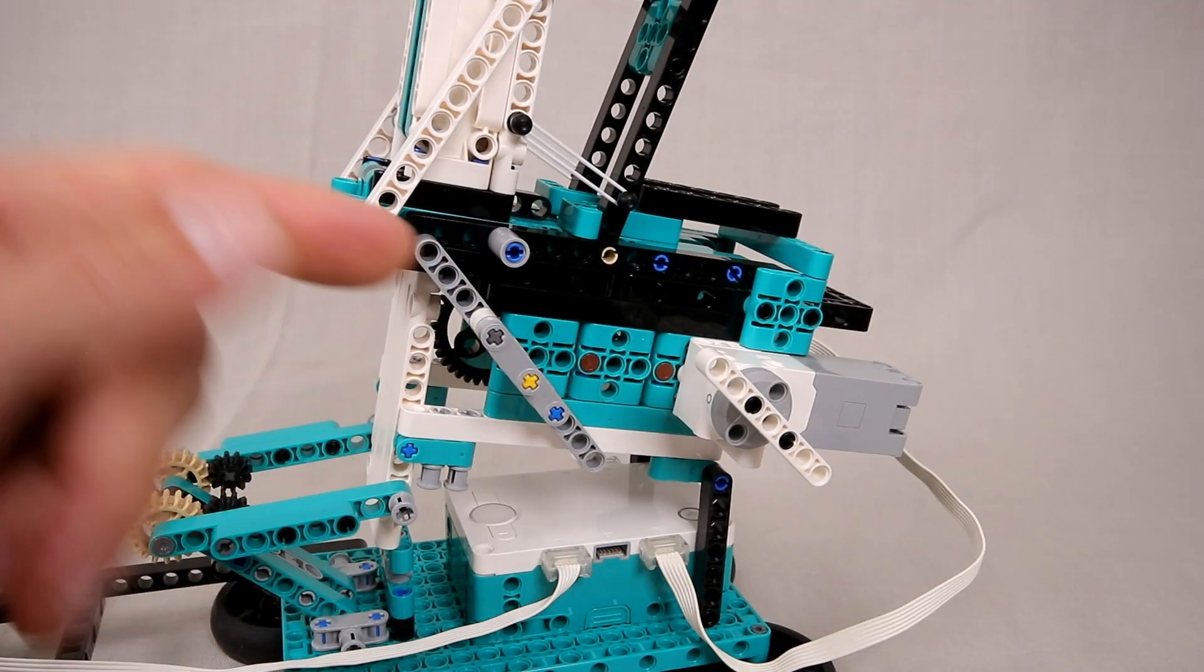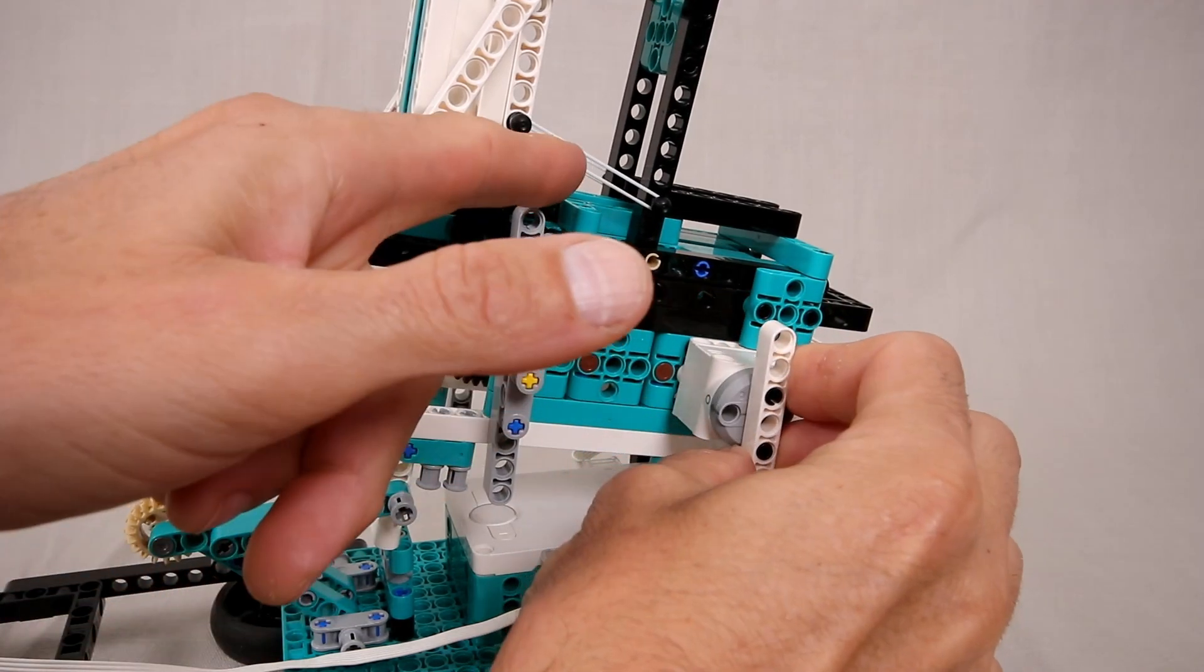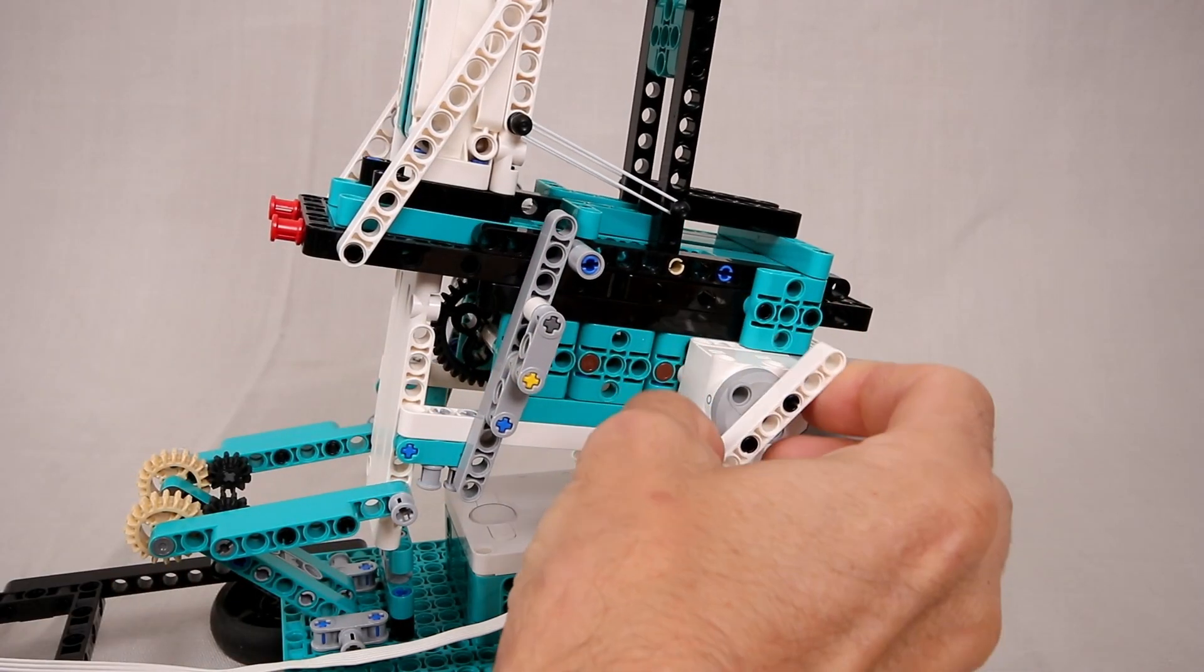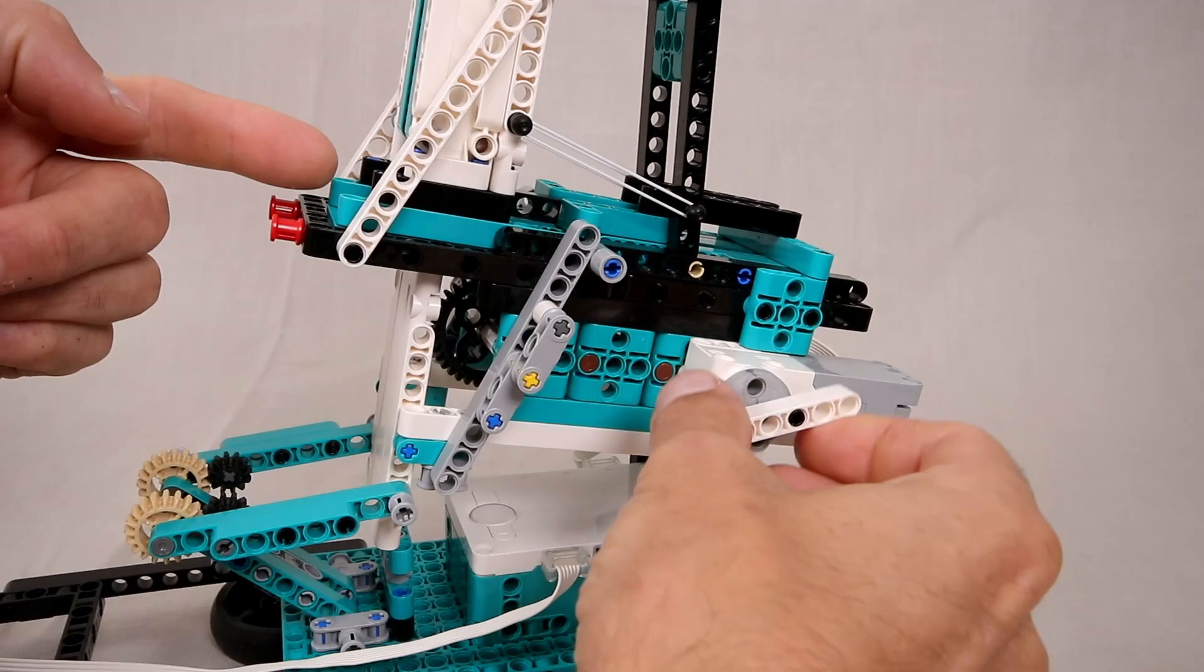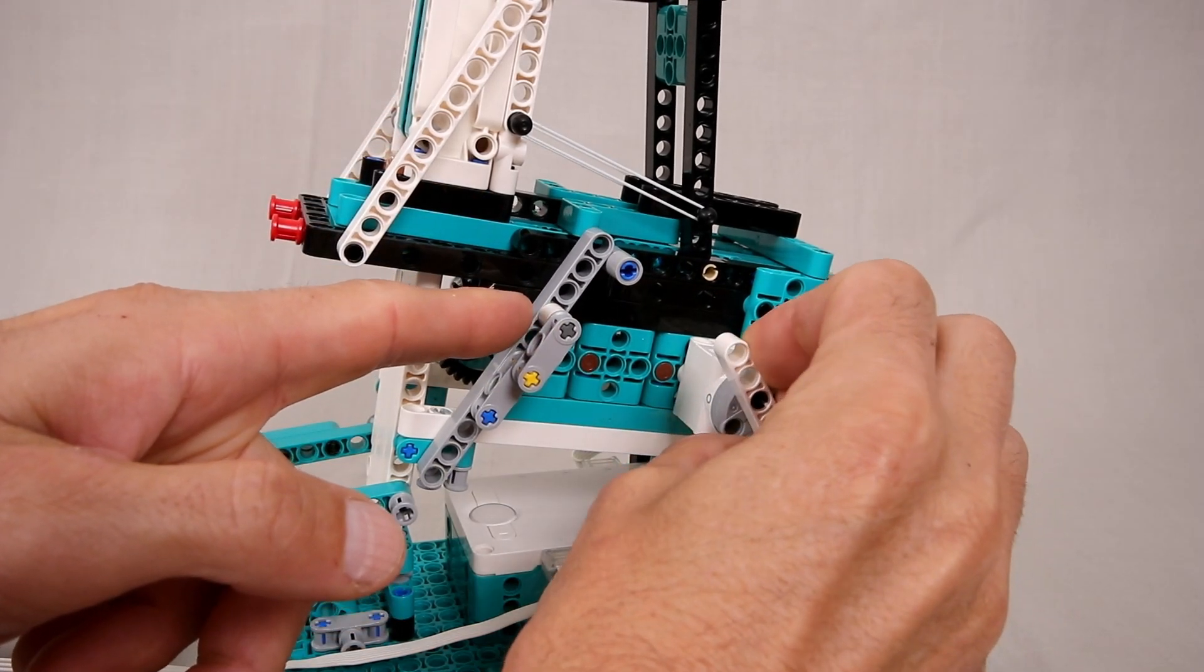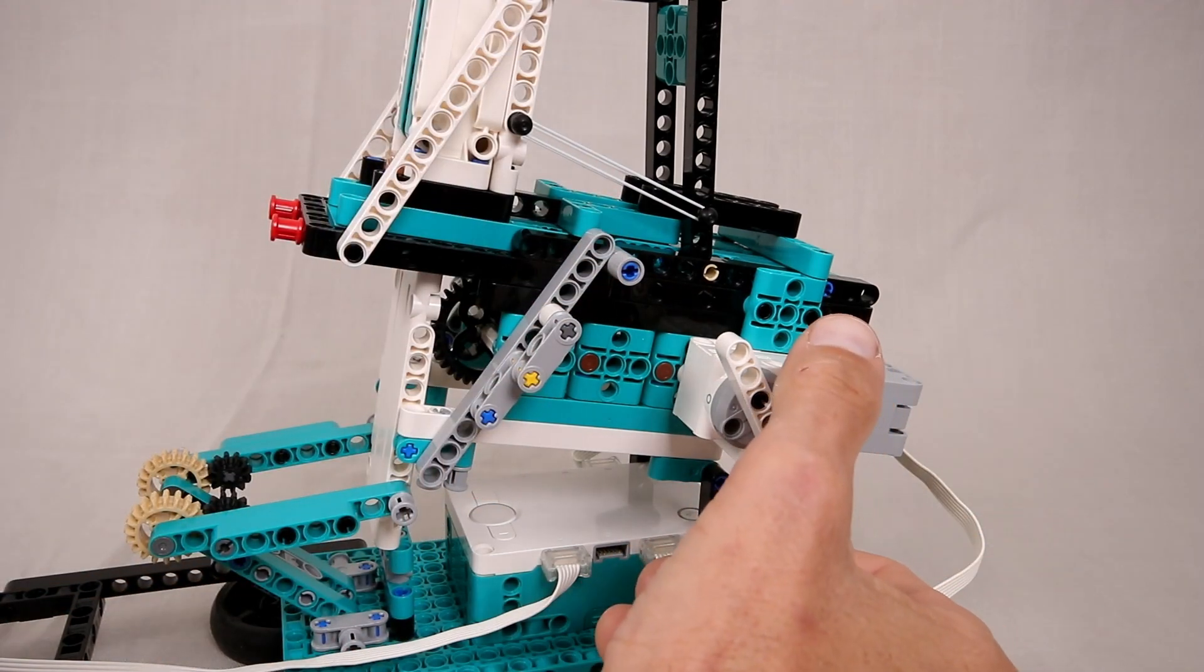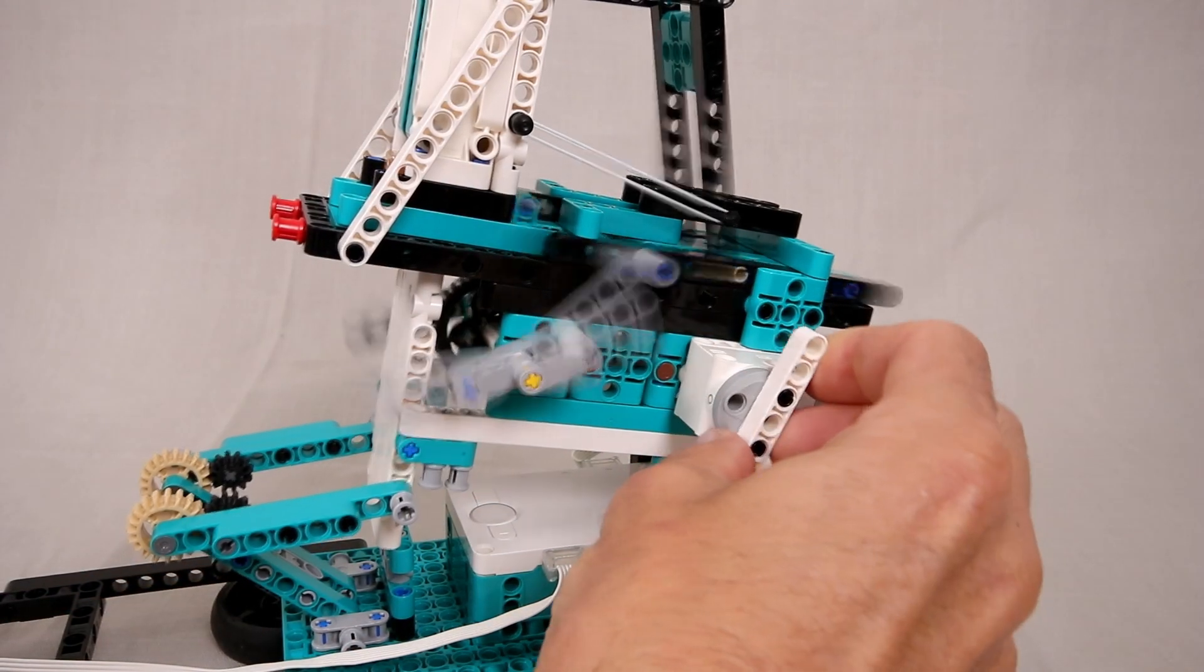As the launch arms rotate they will push back on these pins on either side of the slider which will load energy into the rubber bands. Eventually a stack of caramels will drop and as the launch arms continue to rotate they will eventually pass underneath these pins which will cause the slider to be released and the caramel to be launched.